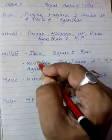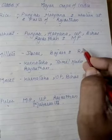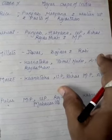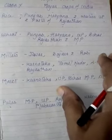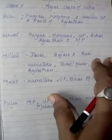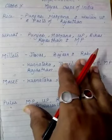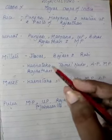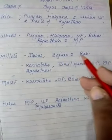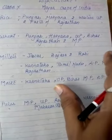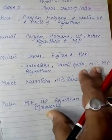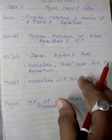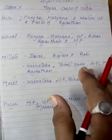Third come the millets. Jowar, Bajra, and Ragi are the important millets grown in India. They are grown as coarse grains and have very high nutritional value. It is a rain-fed crop grown in most areas with hardly any need for irrigation. Major Jowar-producing states are Maharashtra, Karnataka, Andhra Pradesh, and MP. Bajra is grown on sandy soil and shallow black regions — mostly in UP, Maharashtra, Gujarat, Haryana, Karnataka, and Tamil Nadu.